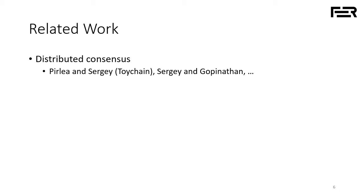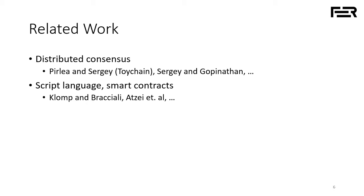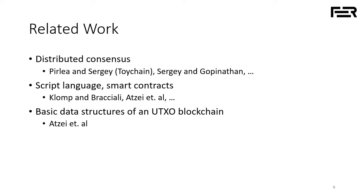They can prove various properties of that protocol, and interestingly they can also extract code and run an actual verified consensus node. Smart contract modeling and verification has also received lots of attention, especially in the Ethereum world — the Ethereum virtual machine and related languages for smart contracts. In the Bitcoin world, Klomp and Bracciali and also Atzei and others build models to analyze and verify various properties of Bitcoin scripts. In contrast, there is much less published work on the basic data structures of a system such as Bitcoin. One notable exception is the pen-and-paper formal model of Bitcoin blocks and transactions by Atzei and others, which we consider the state-of-the-art prior to our research and use as a reference point.